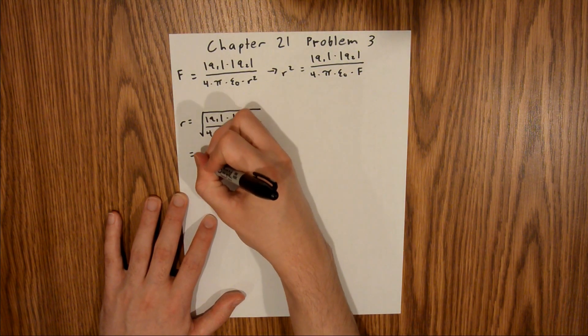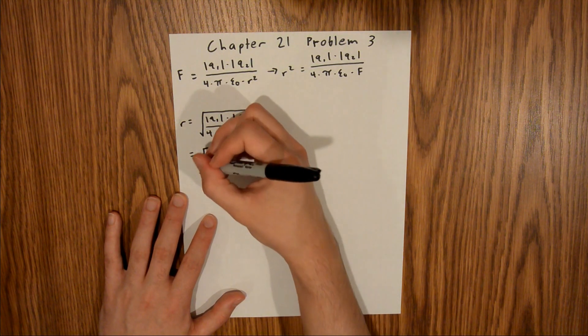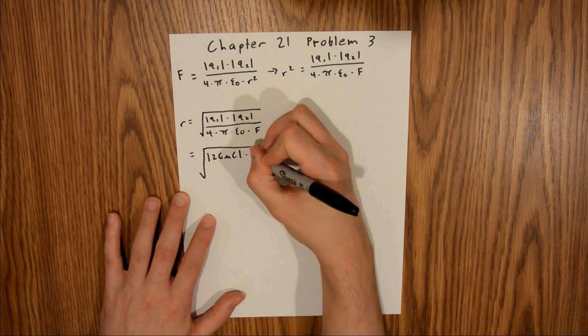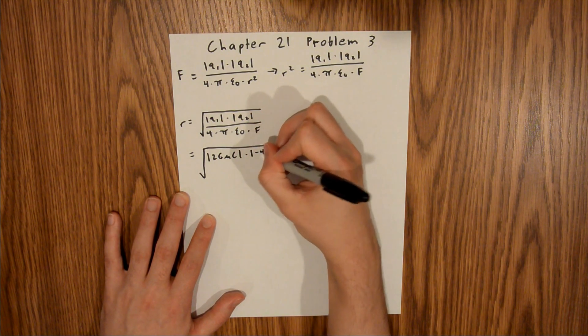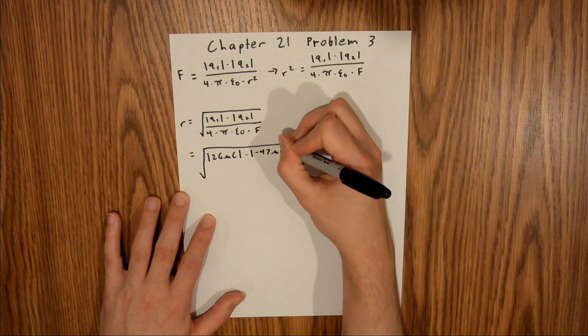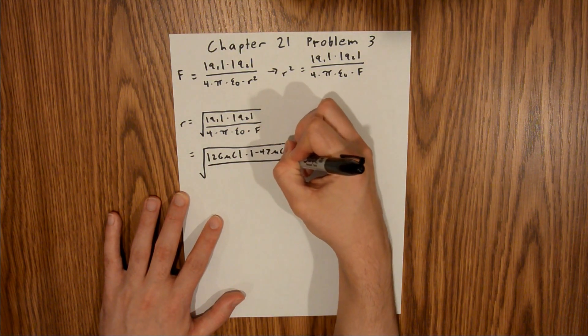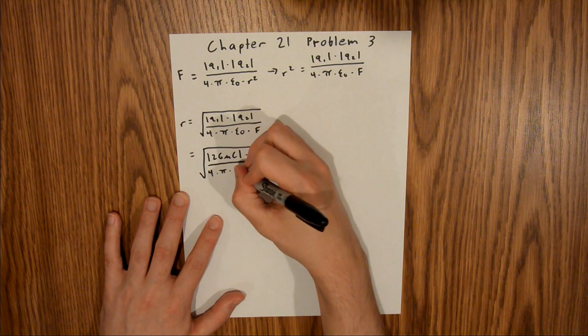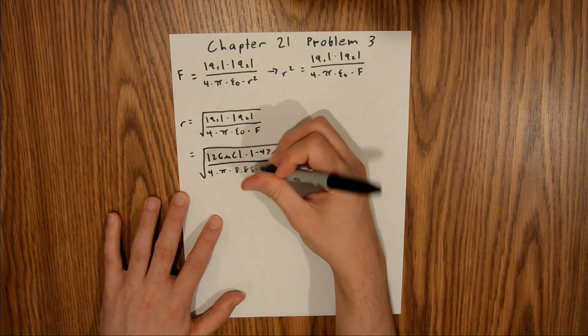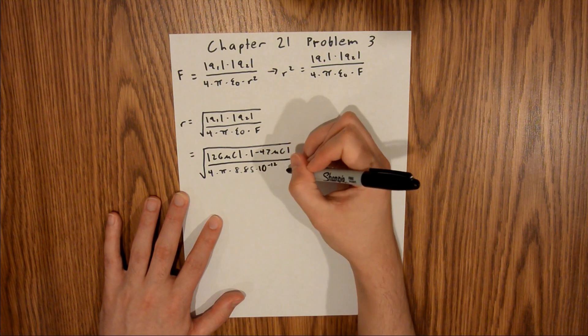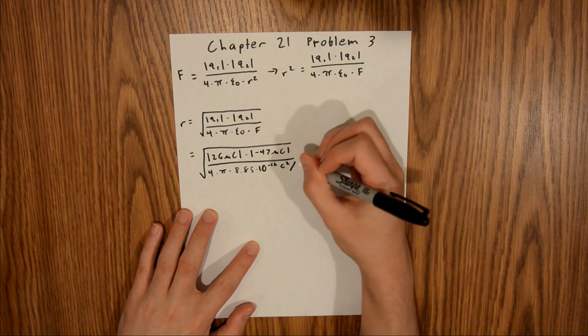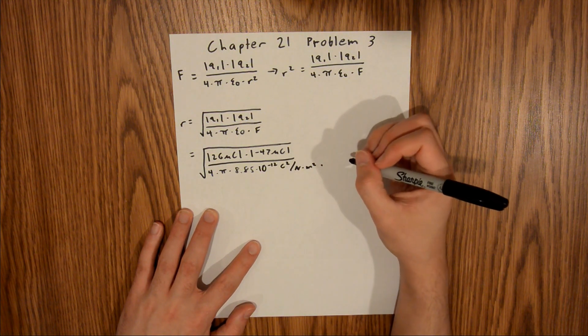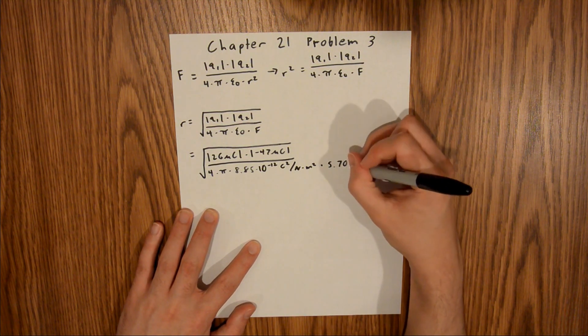This is going to be equal to the square root of the absolute value of 26 microcoulombs, times the absolute value of negative 47 microcoulombs, divided by 4 times pi times 8.85 times 10 to the negative 12 coulombs squared, divided by newton times meter squared, times the force, which we are told is 5.7 newtons.